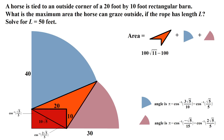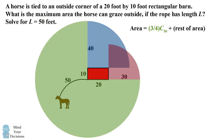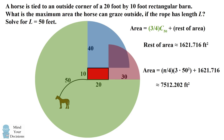Now we use the formula for the area of a circular sector, which equals the radius squared times the central angle divided by two. We know the radius of each sector and we've figured out the angles, so we substitute in the values. We get approximate answers, and putting it all together, the combined area of these three shapes is approximately 1621.716. So the total area the horse can graze is the three-quarter circle with radius 50 plus this calculated area, giving approximately 7512.202 square feet — exactly the same answer as the calculus method. Although it took more involved calculations, we could figure it out without calculus.